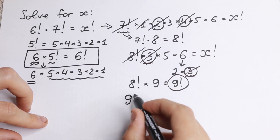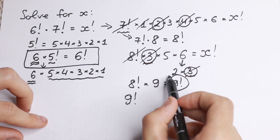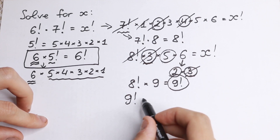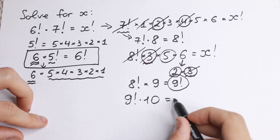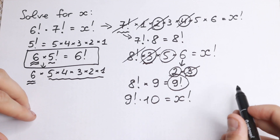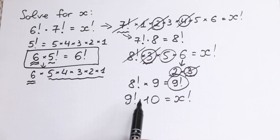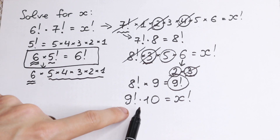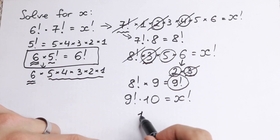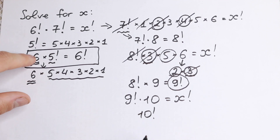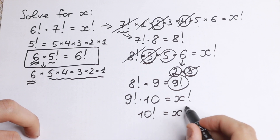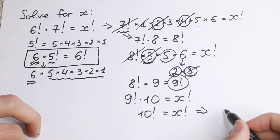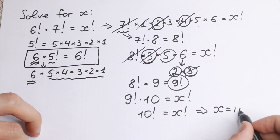Now we have 9 factorial times what remains — we still have 2 and 5, and 2 times 5 equals 10. So we have 9 factorial times 10 equal to x factorial. Applying our rule one more time, 9 factorial times 10 equals 10 factorial. Therefore 10 factorial equals x factorial, and we can see that x equals 10.